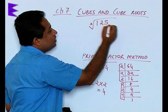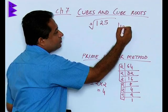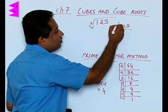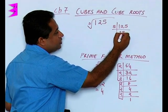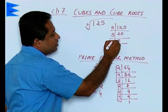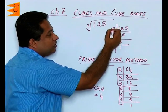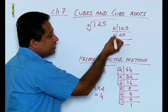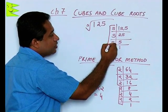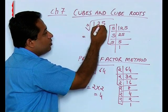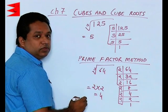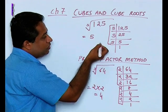We can find out the factors of 125. So 5 goes 25 times, 5 goes 5 times here, and 5 goes once. So we find that there are three numbers, all the three numbers are identical, that is 5s, and this becomes a group. So we can say cube root of 125 is 5.